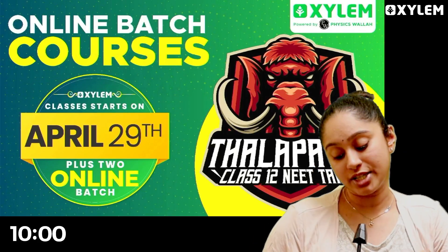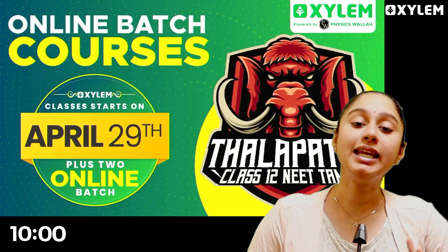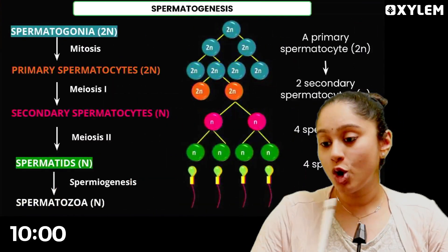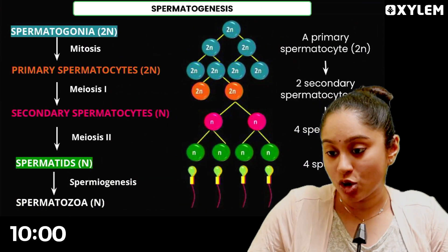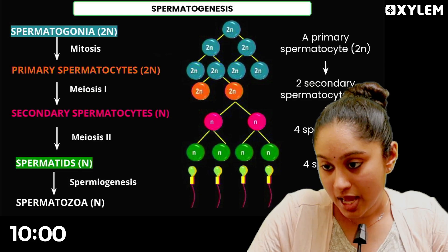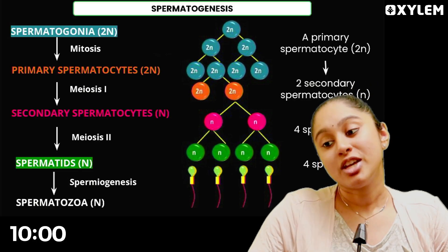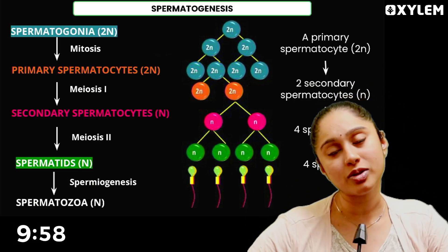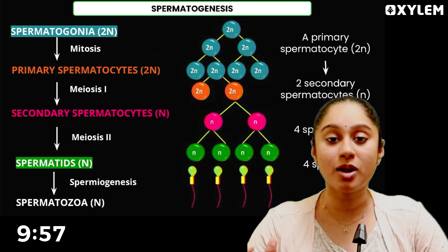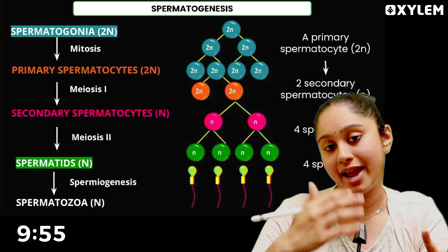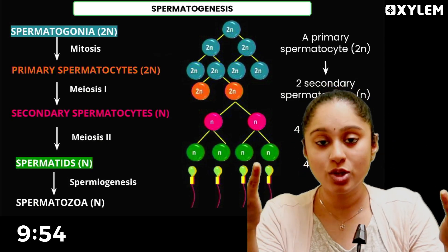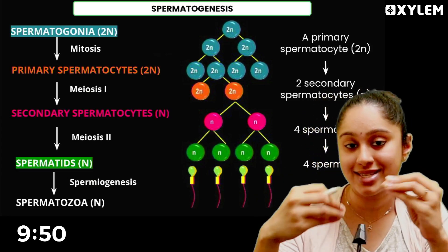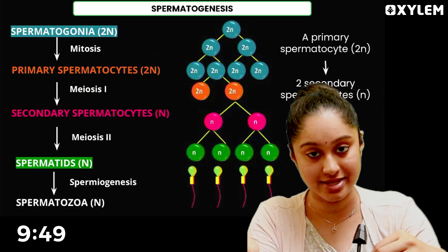Now let's start with Gametogenesis. So, Gametogenesis — there are two gametes: sperm and ovum. So the process forming these is Spermatogenesis and Oogenesis respectively.